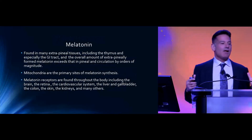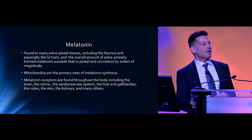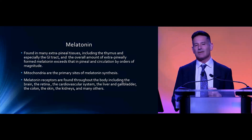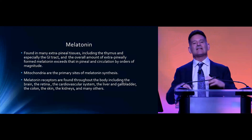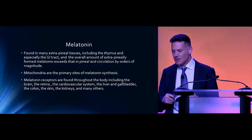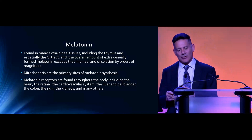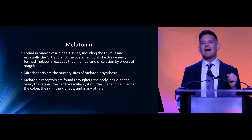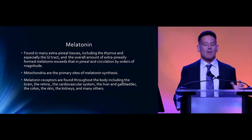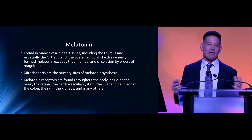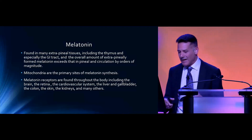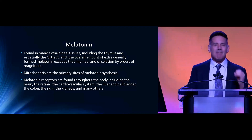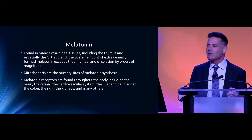We all think that if anybody asks where melatonin is produced, it's produced in the pineal gland. But the truth is that most melatonin is not produced in the pineal gland — it's produced in extra-pineal tissues. There is far more extra-pineal melatonin than pineal, and the primary place you're going to find it is in the mitochondria of just about every cell in the body. The receptors for melatonin are found all over the body.